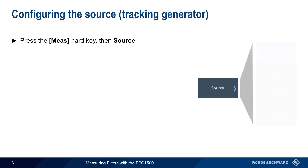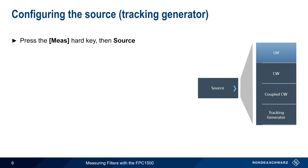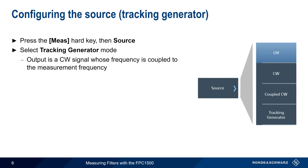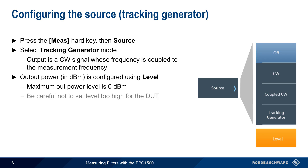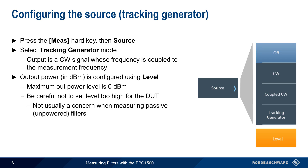To configure the FPC's tracking generator, press the Measure hard key and then Source. For filter measurements, we want tracking generator mode, in which the output of the generator is a CW signal whose frequency is coupled to the measurement frequency — that is, the source output frequency sweeps at the same rate as the measurement frequency. The output power of the generator is also configurable in units of dBm using the Level key, with maximum output power level being 0 dBm. To avoid distortion and/or damage, it's important to ensure that the output level is not too high for the device under test. This is not a common concern when measuring passive or unpowered filters, but it can be an issue with active filters, which contain amplifiers or other active components.